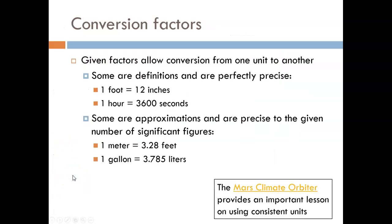What is a conversion factor? It is a relationship that allows conversion from one unit to another. Some conversion factors are definitions and are perfectly precise. For example, one foot is exactly the same length as 12 inches. There is no rounding error. Or one hour is exactly the same time span as 3600 seconds. Some conversion factors are approximations, which means they have some rounding error associated with them. These are only precise to the number of significant figures given.